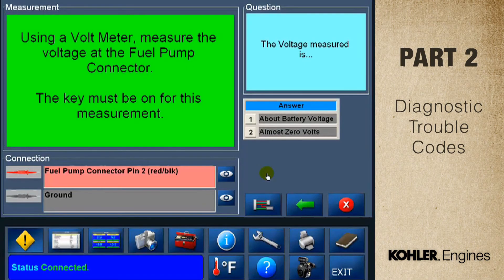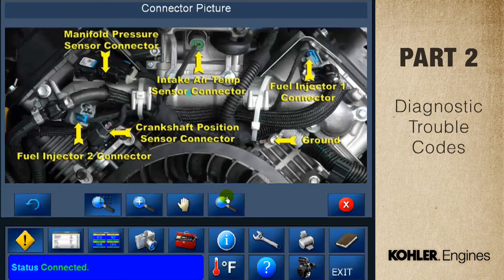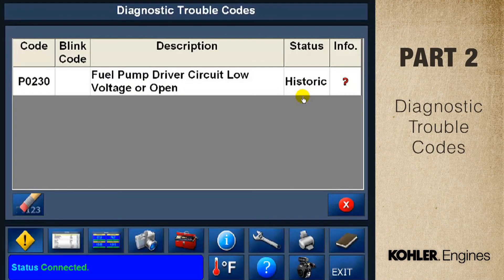Here's another example — watch what happens when I select the eyeball icon for the ground. After testing is complete, you see the suggested repair. After the repairs are complete, you can remove the stored trouble codes by clicking the erase button.